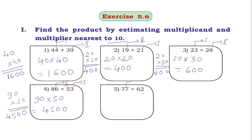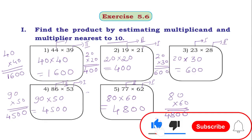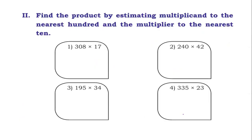Next: 77 × 62. Estimating 77: unit digit is 7 — second case, add 1 to the tens place, giving 80. Estimating 62: unit digit is 2 — first case, estimation is 60. 80 × 60 = 4800. The answer is 4800.